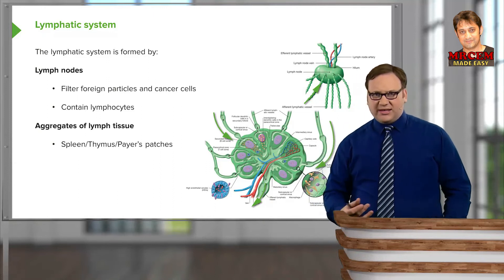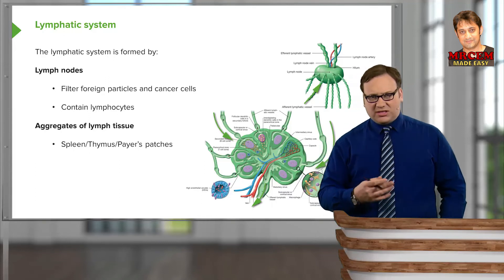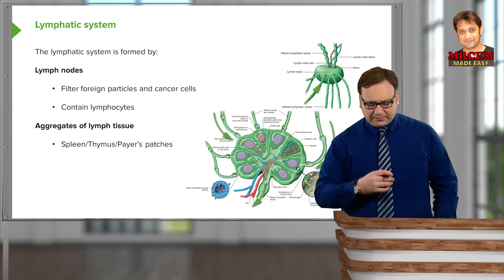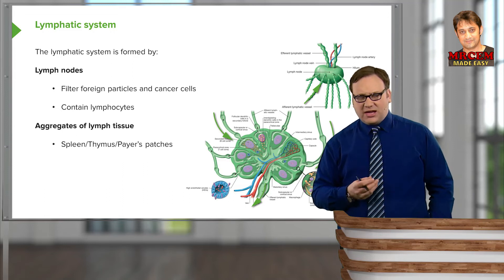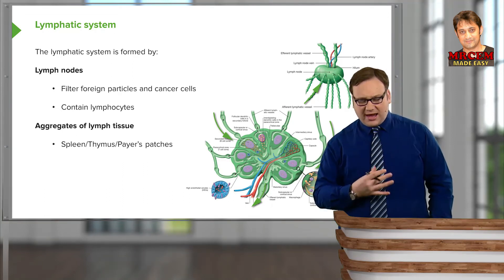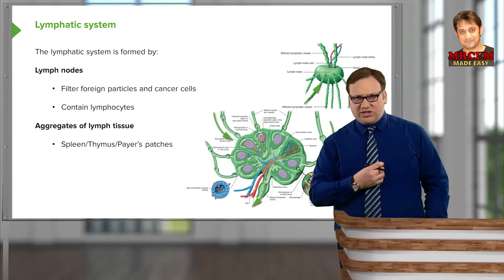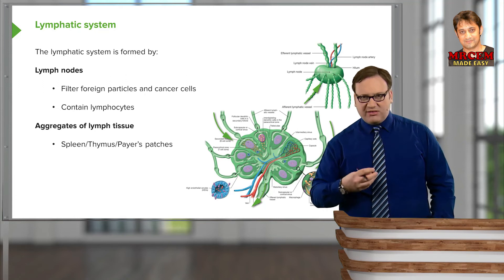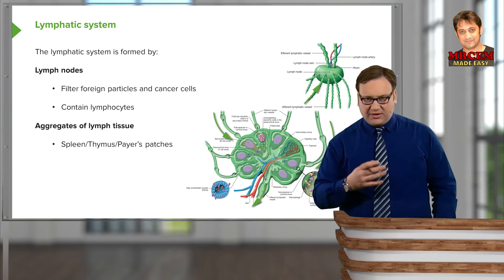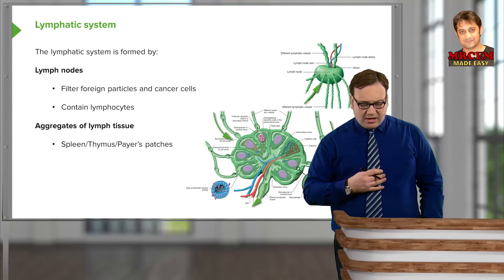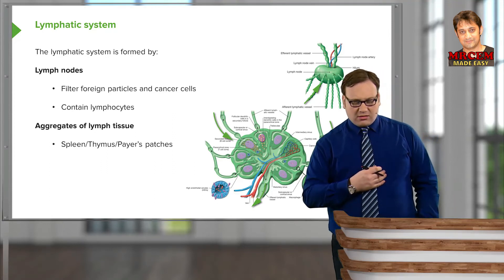These lymph nodes contain lymphocytes and are important in filtering out foreign particles. Metastasizing cancer cells, once they've broken through the basement membrane of their organ, can also travel through the lymphatic system, and these lymph nodes can also filter out these cancer cells. Detection of cancer cells in lymph nodes can indicate that the cancer has actually spread. Throughout the body, we have various aggregates of lymphoid tissue — larger lymph nodes essentially — occurring at the spleen, the thymus gland, or Peyer's patches within the distal ileum. We have these lymph nodes that filter debris, foreign particles, and cancer cells running through the lymphatic system.